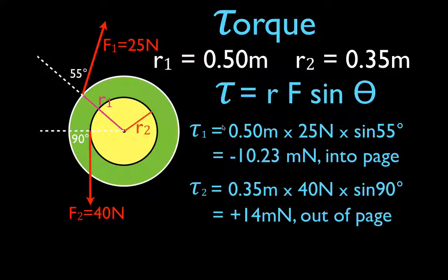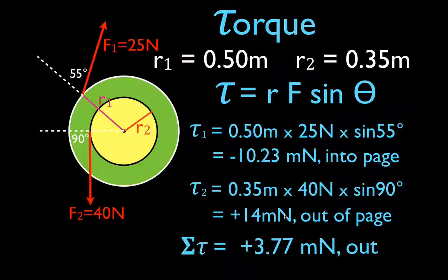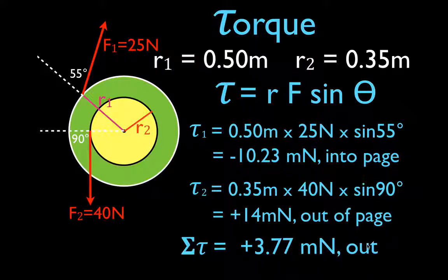To find the total torque, we add the two torques together: negative 10.23 newton-meters plus positive 14 newton-meters gives a net torque of positive 3.77 newton-meters. The positive sign tells us the wheel will rotate in the counterclockwise direction, so the net torque vector points out of the page.